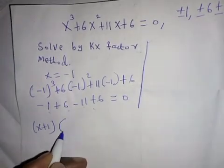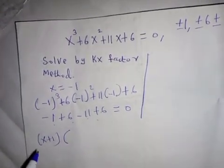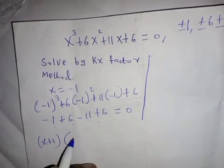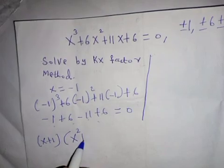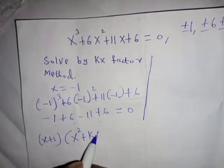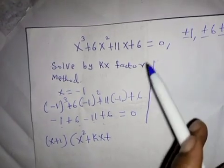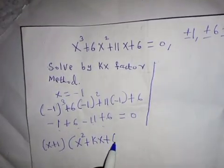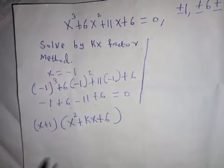We ask ourselves which expression we can multiply with x plus one to get x cubed. That will be x squared plus kx, and the last number remains the same, plus six.